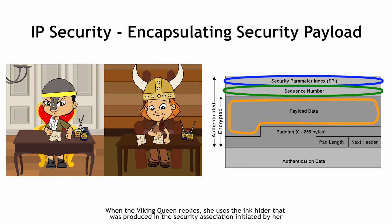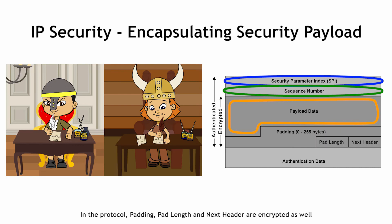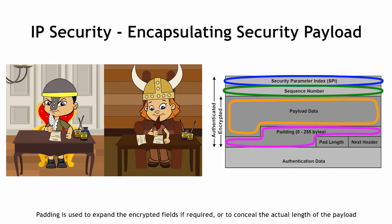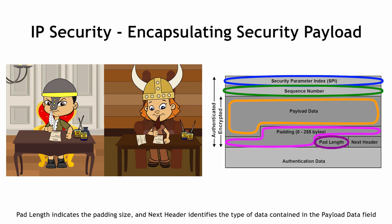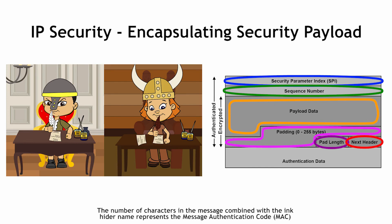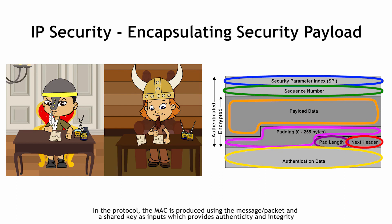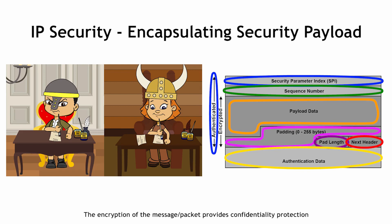When the Viking Queen replies, she uses the inkhider that was produced in the Security Association initiated by her. In the protocol, padding, pad length, and next header are encrypted as well. Padding is used to expand the encrypted fields if required or to conceal the actual length of the payload. Pad length indicates the padding size and next header identifies the type of data contained in the payload data field. The number of characters in the message combined with the inkhider name represents the message authentication code. The MAC is produced using the message or packet and a shared key as inputs, which provides authenticity and integrity. The encryption of the message or packet provides confidentiality protection.